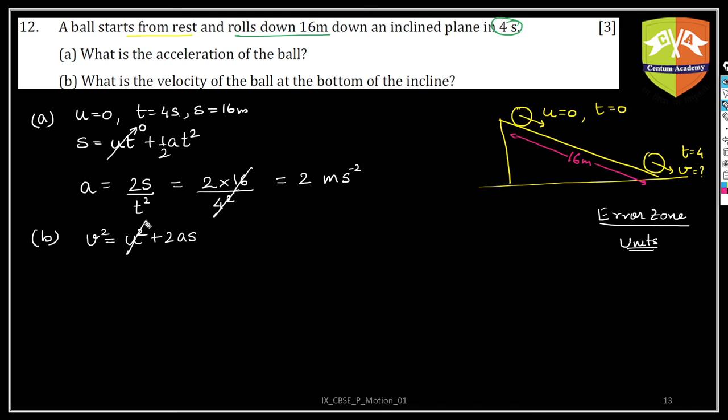Now this one is again 0 because U is 0. So hence V is under root 2AS. What is 2AS? Let's solve. 2A, A is how much? Acceleration is 2. And S is how much? 16.